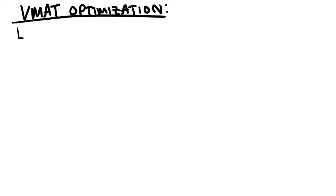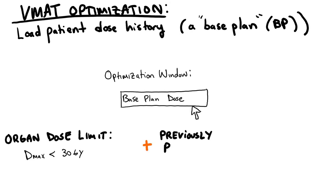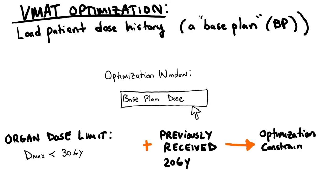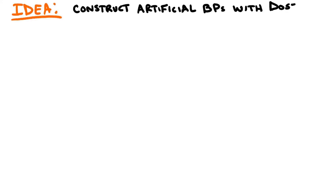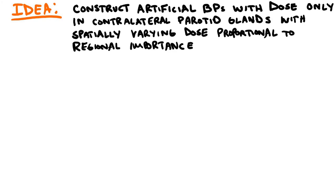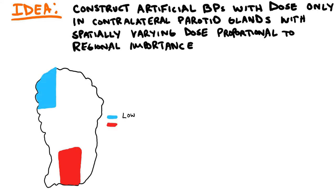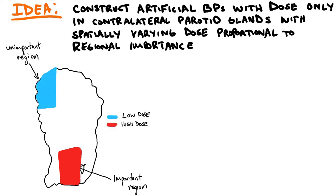Treatment planning systems allow patient dose histories to be included in optimization by loading previously received baseplans. This allows for dose already received in previous plans to be included in the dose calculation for the new plan. What we've done is retroactively create artificial baseplans for patients which assign dose only within parotid glands, with different amounts in different regions such that regional dose is proportional to importance.